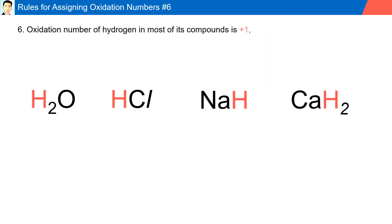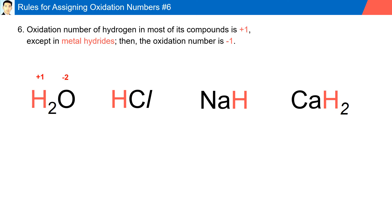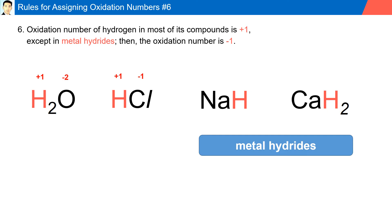Rule number six: the oxidation number of hydrogen in most of its compounds is plus one, except in metal hydrides, where the oxidation number is minus one. For example, in water, oxygen is always minus two and we have two hydrogens, each contributing a plus one. In HCl, chlorine is minus one, therefore hydrogen has to be plus one.